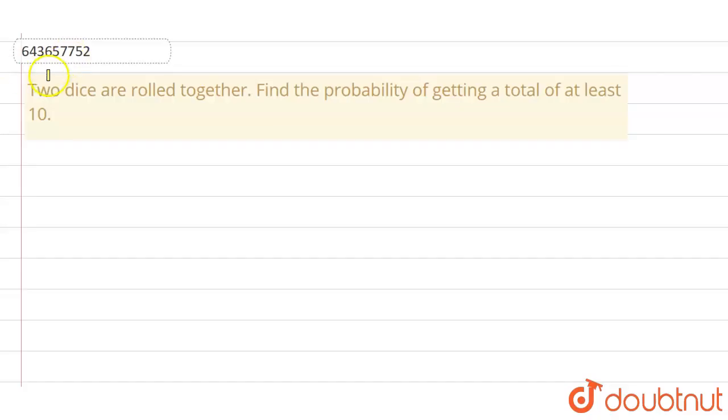Hello everyone. The following question says two dice are rolled together. There are two dice which are rolled together. Find the probability of getting a total of at least 10. At least 10 means the sum should be 10 or more than 10. That means it could be 10, it could be 11, it could be 12.